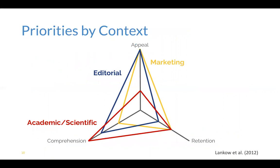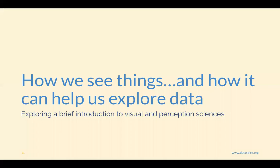There are different things we stress depending on our audience. This three-point framework considers retention of information, the appeal of what they're looking at, and comprehension of what is being shared. Different communities — marketing, editorial, or academic/scientific — fall differently across these three dimensions. It's important context that we make different choices in different situations and stress different things.